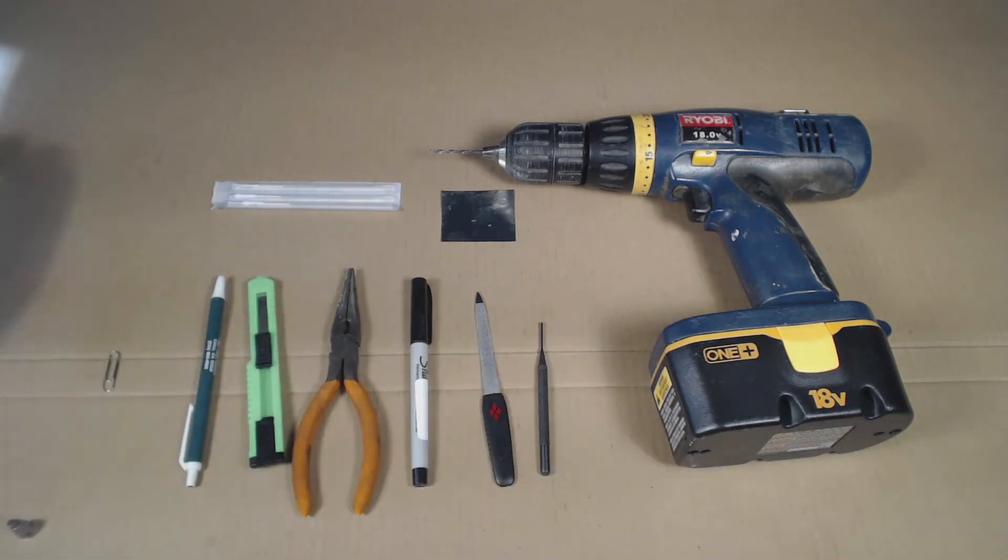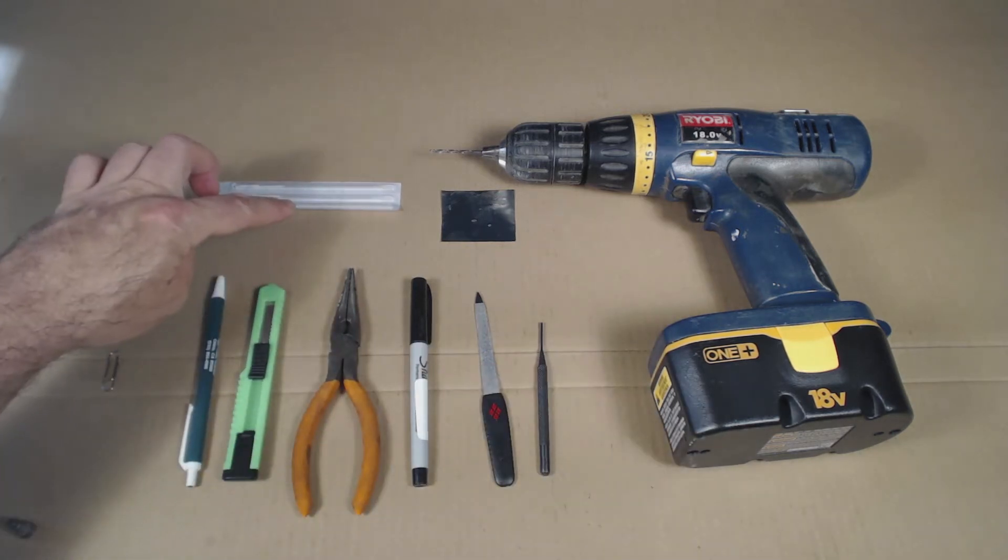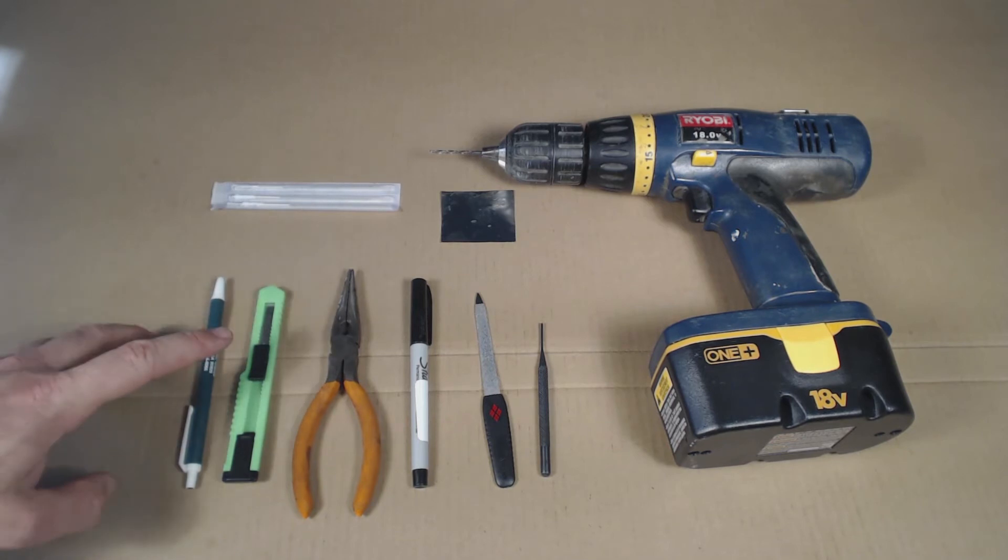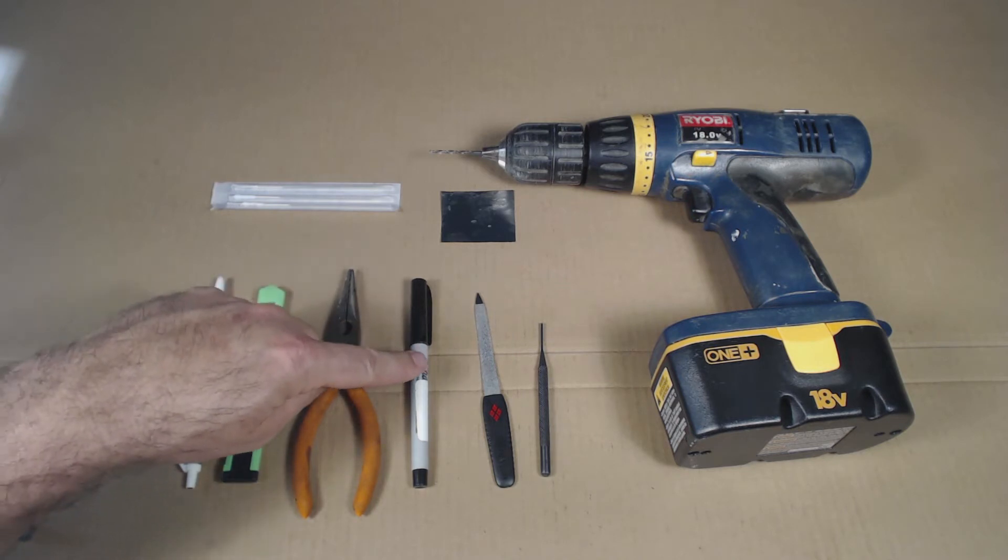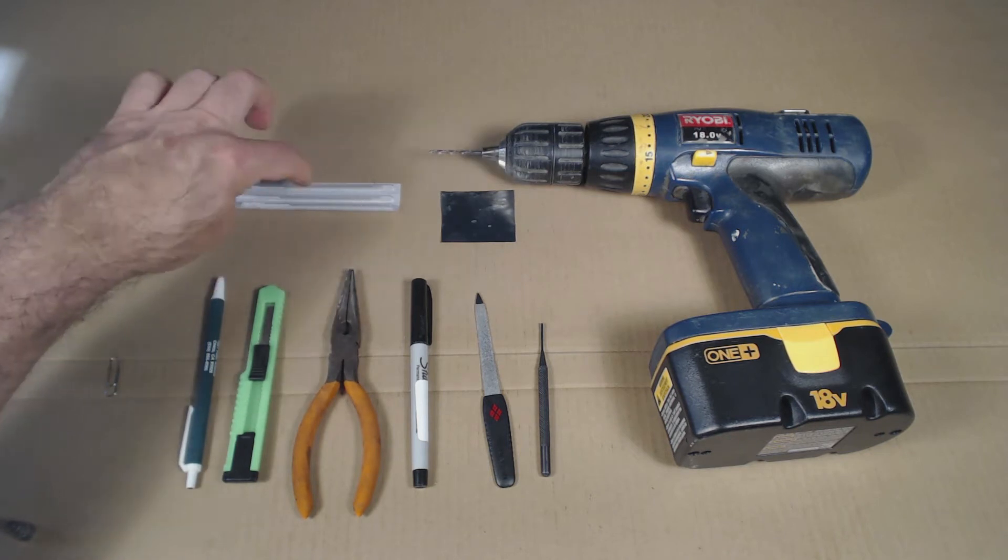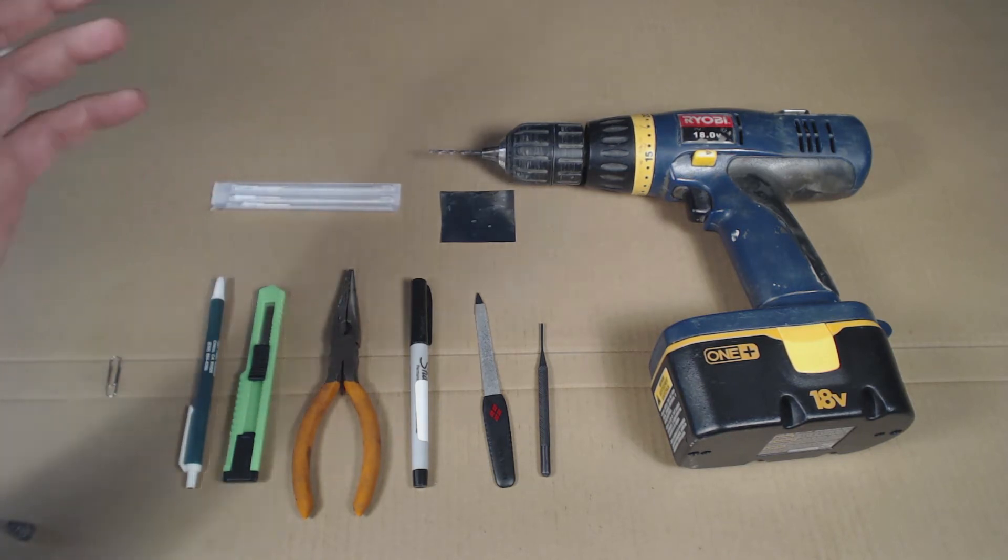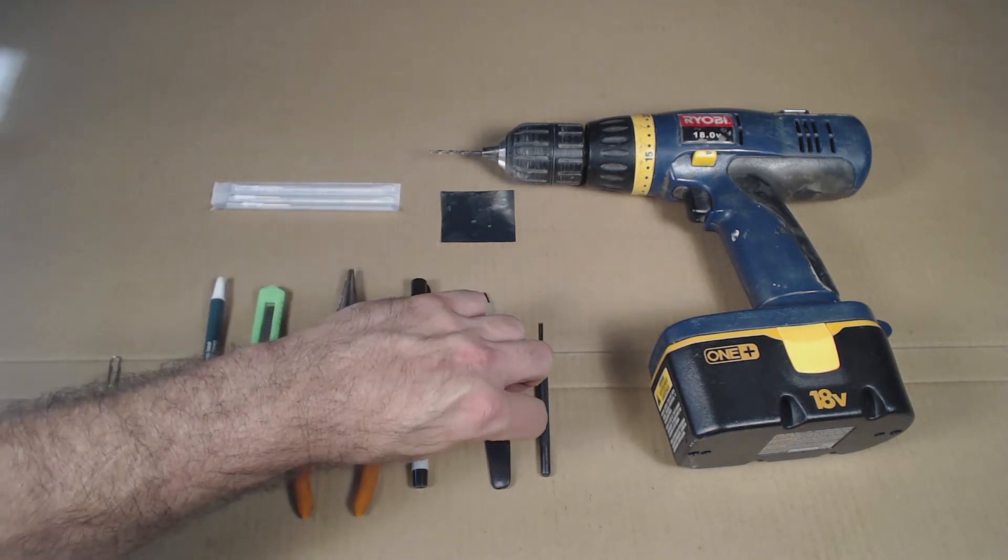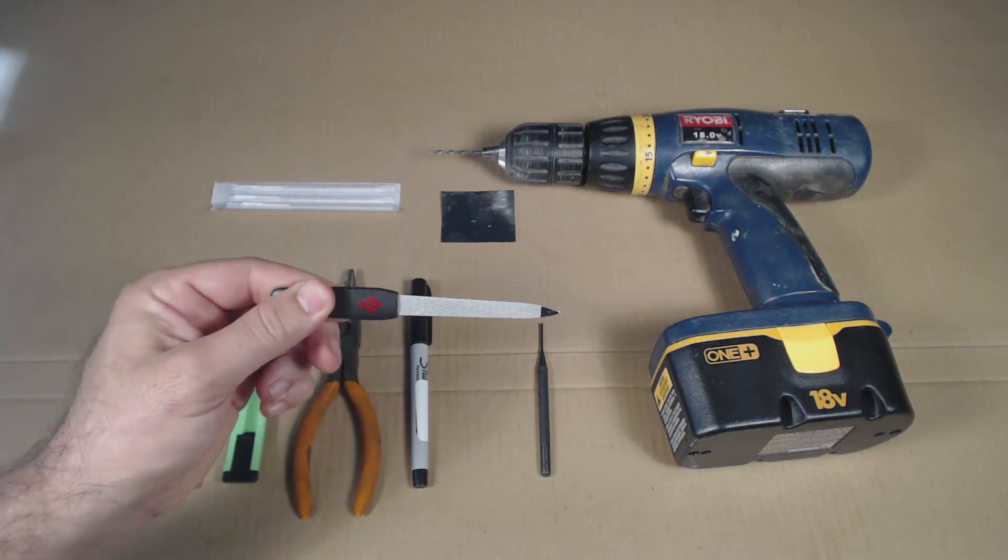Next, you need something to cut the tube with. So you need a utility knife or a razor blade or an exacto knife. You need some needle nose pliers. You need a marking pen. Again, this you won't take apart. You'll just be using it to mark where the slots are in the tube.